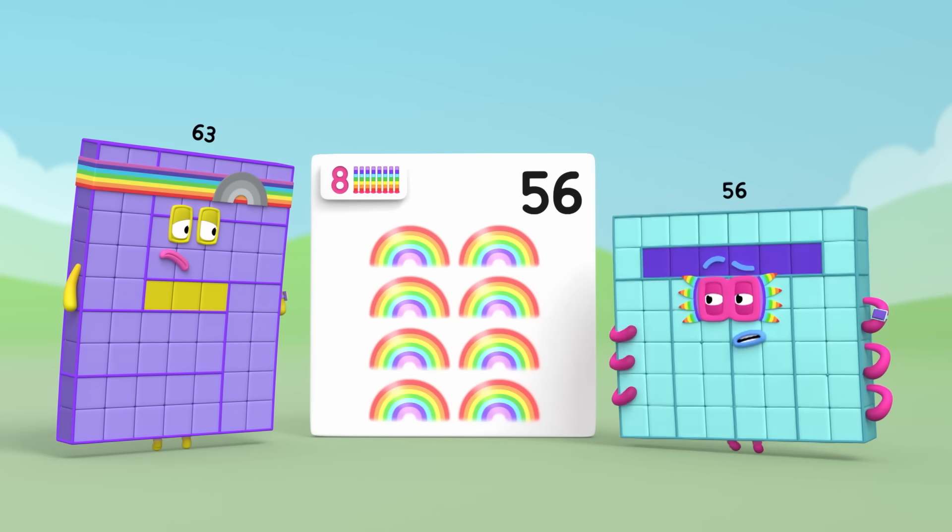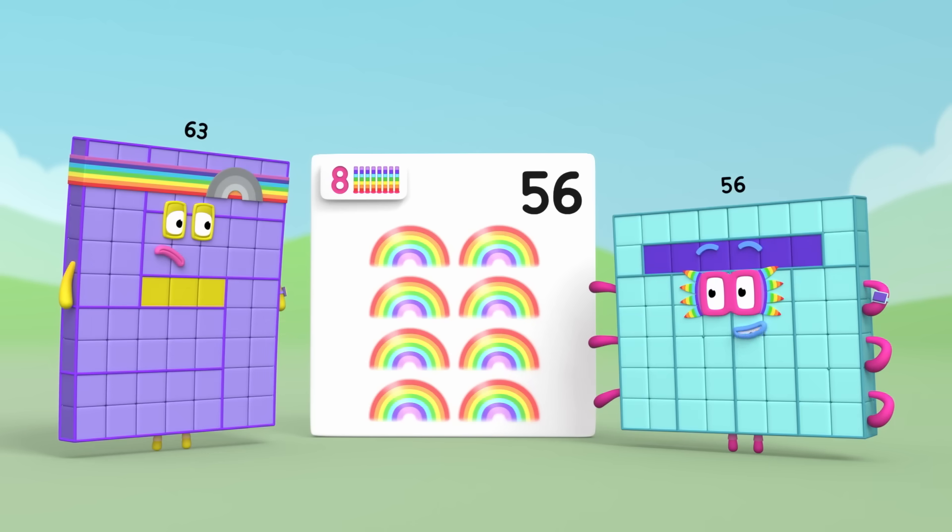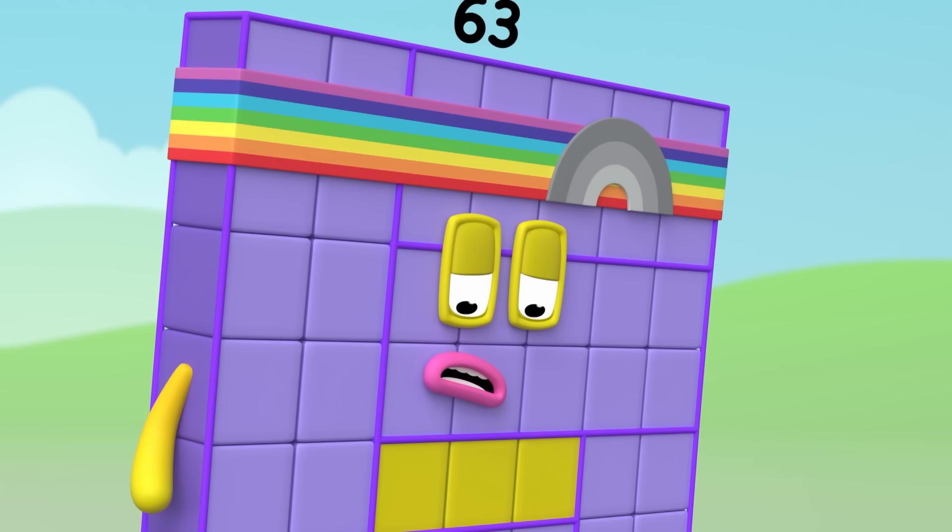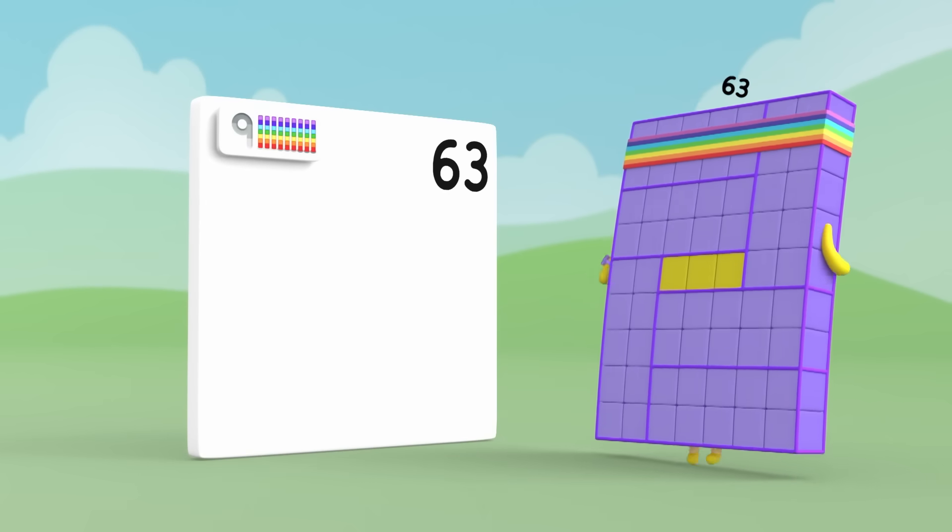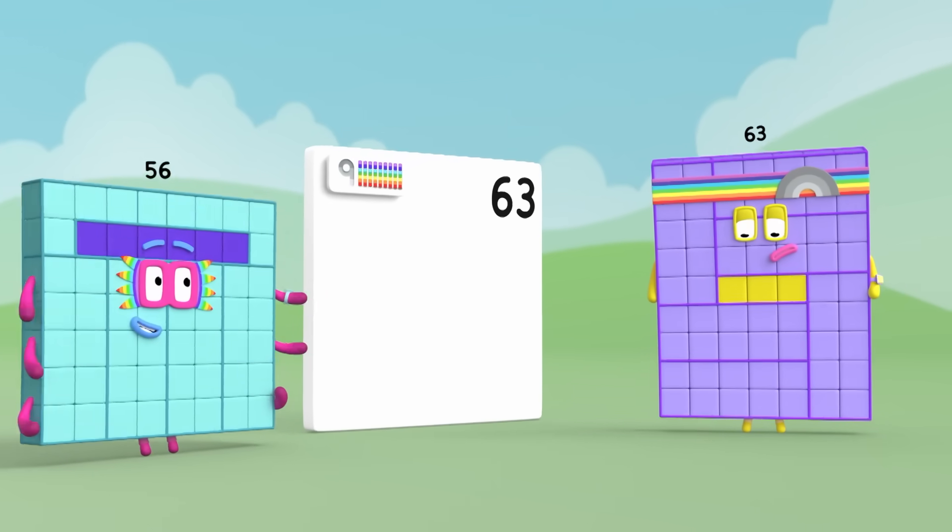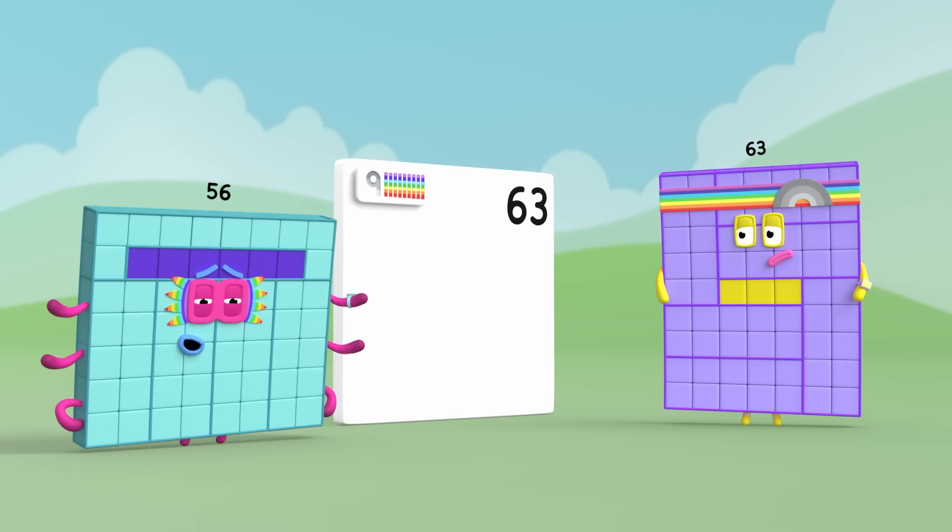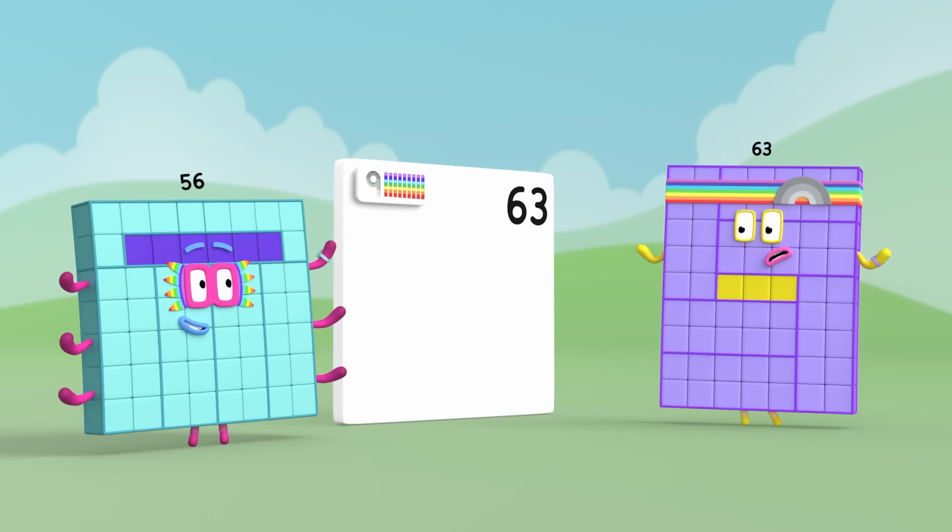You look a bit down, Sixty Three. Lucky I'm here. In a colourful fix, call Fifty Six. That's my problem, Fifty Six. I'm just not colourful enough. But you're one of the Rainbow Sevens. That means you're full of colourful rainbow surprises just waiting to burst out.